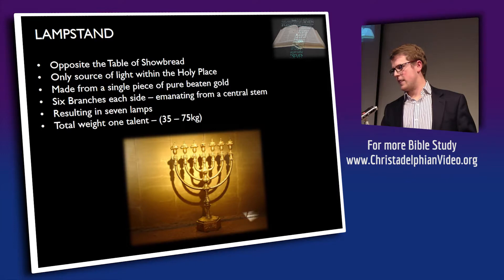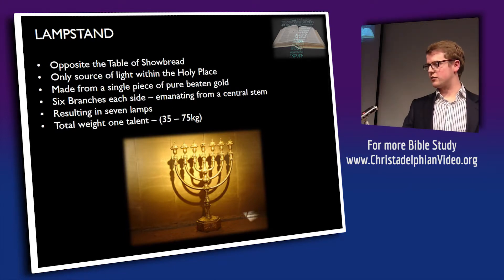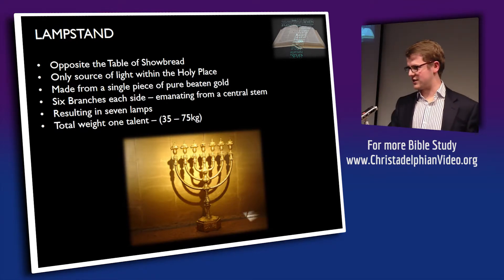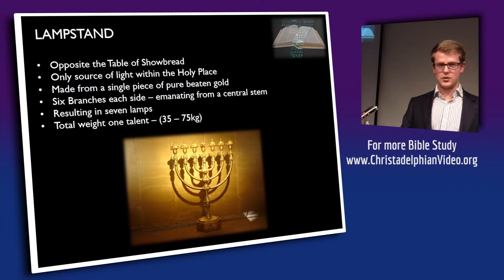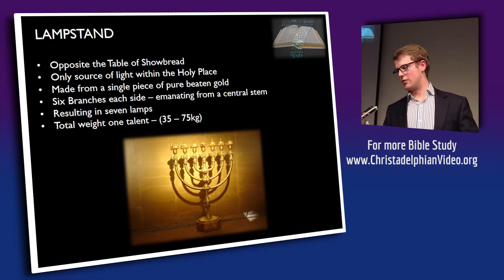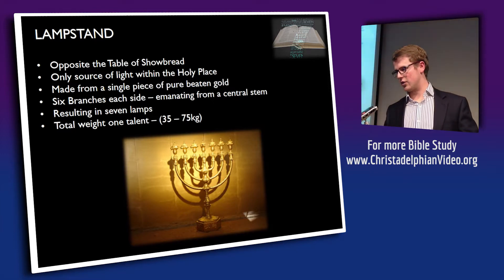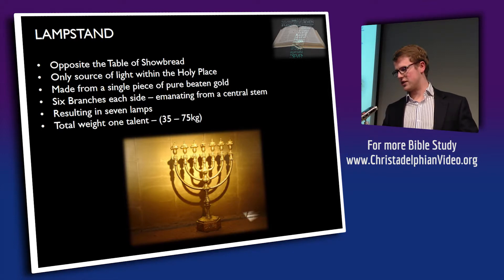Just to bring this to life with some modern comparisons: gold currently sits at about £25,000 per kilo. A talent of gold — we don't know exactly what it weighed — would put this lampstand at somewhere between £0.8 million and £1.8 million. We're talking about a very valuable piece of work, and also remarkable skill to make it from one beaten piece of gold.